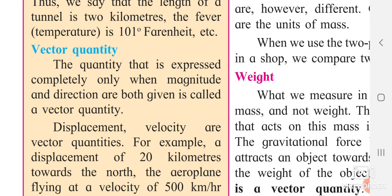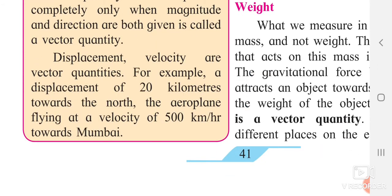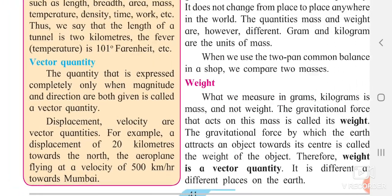An aeroplane flying at the velocity of 500 km per hour towards Mumbai — the direction towards Mumbai is also present. If it was only 500 km per hour, it was scalar. But since the direction is specified, it is a vector quantity. These are the ideas about scalar and vector quantities.